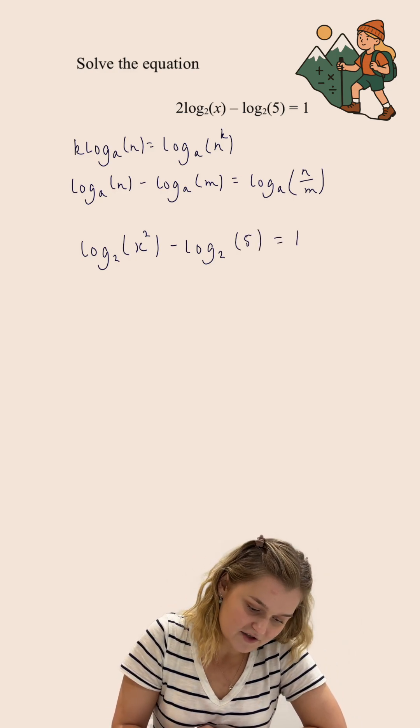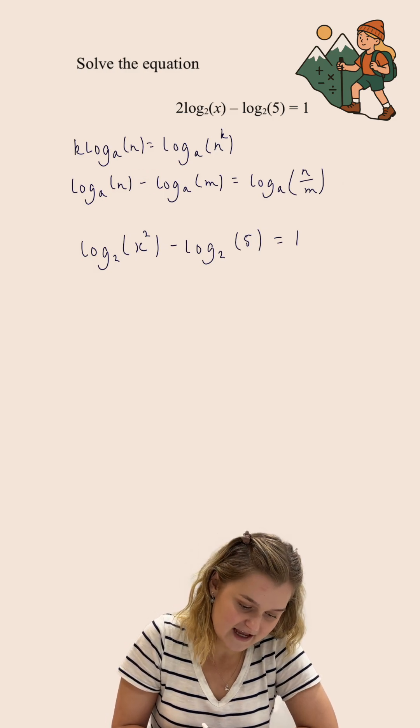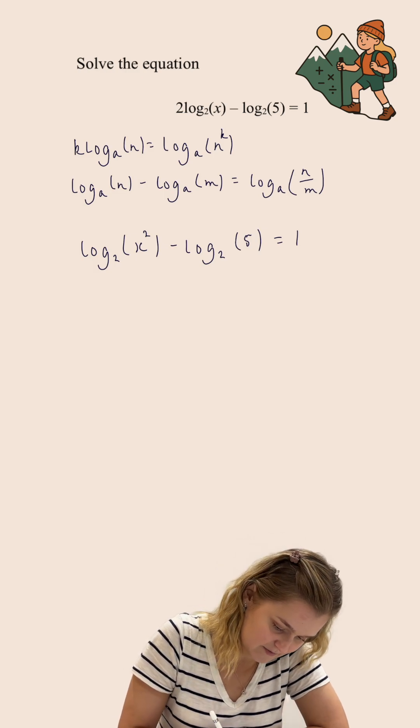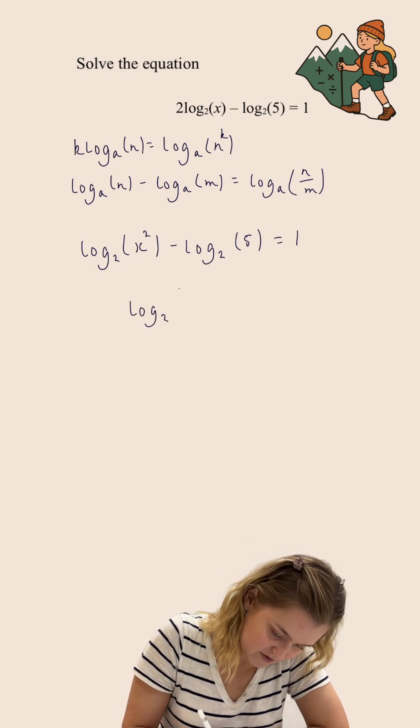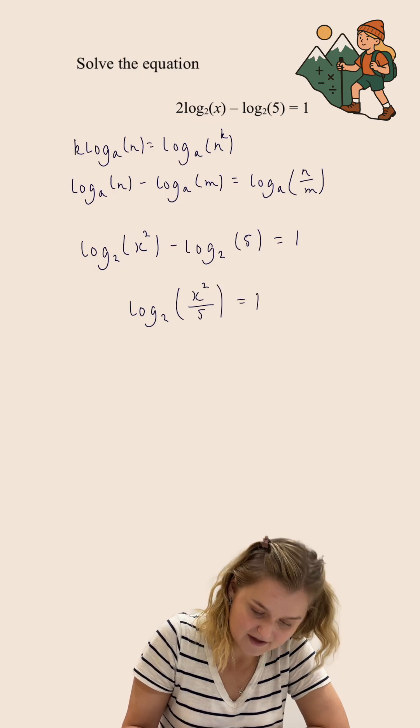I'm now going to use this second rule that I had written down. So if you're subtracting the logarithms that have the same base number, then I can divide the things inside the logarithms. So I've actually got log₂(x²/5) equals 1.